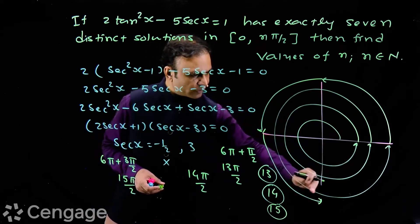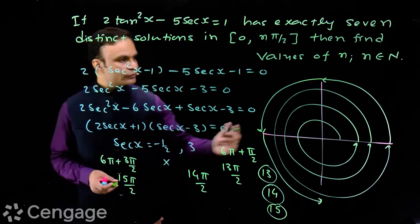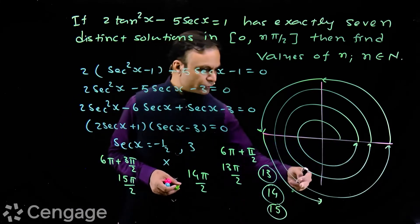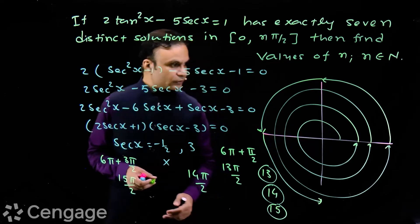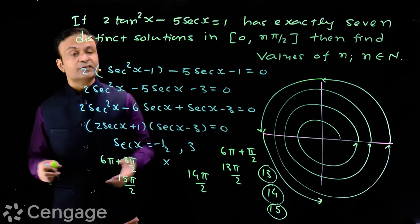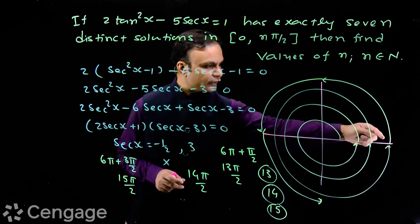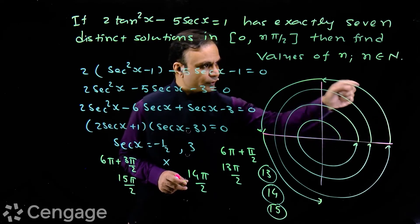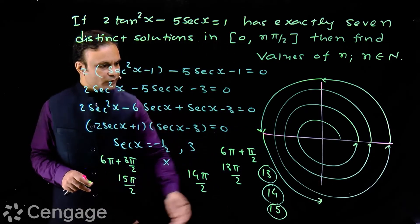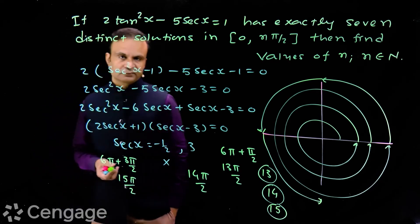If we take this quarter turn, we get only one root in the first quadrant. We cannot move further into the fourth quadrant, otherwise we will have one more value of x for which sec x = 3, giving us 8 solutions. So after 3 complete rotations giving 6 solutions, we can take either a quarter, half, or three-quarter rotation. We have 3 possible values of n: 13, 14, and 15. The least value is 13 and the greatest value is 15.